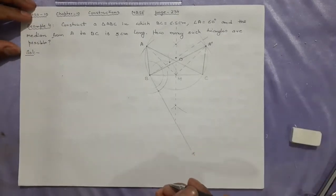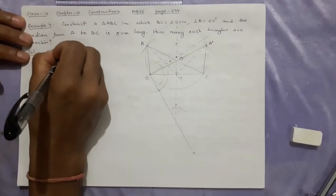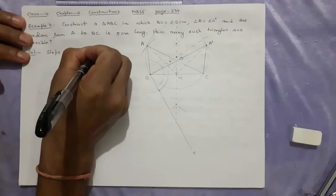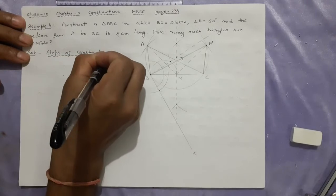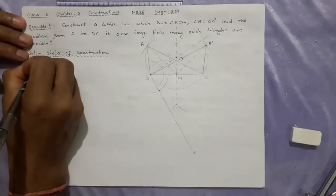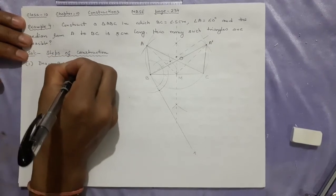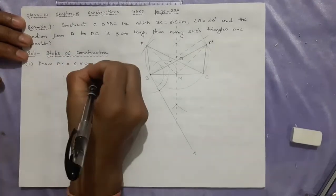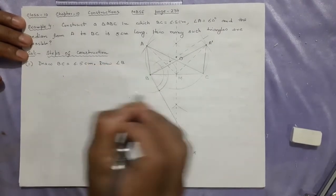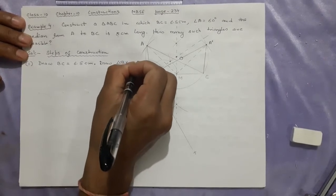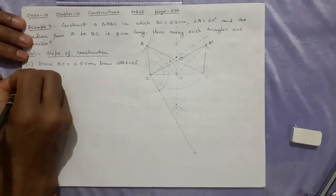6.5 centimeters. Draw angle CBX equal to 60 degrees. CBX 60 degrees taken. This is C.